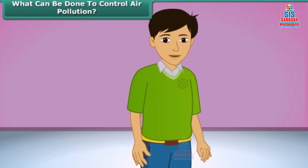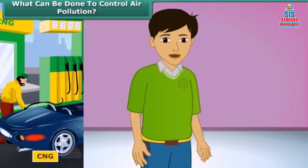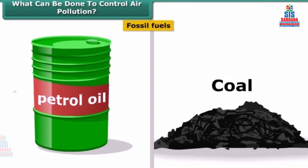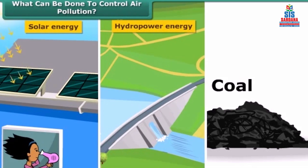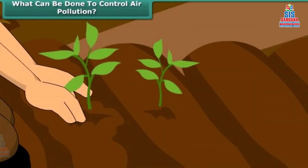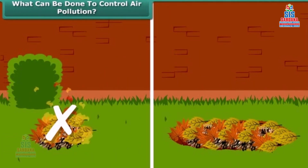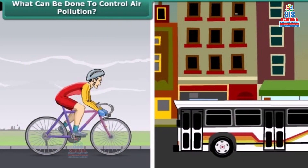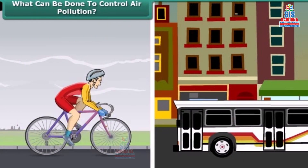What should we do to reduce air pollution? We can use clean fuels such as CNG, LPG, and unleaded petrol. Instead of fossil fuels, we can use solar energy, hydropower, and wind energy. We can also plant new trees. Rather than burning dry leaves, we can put them in a compost pit. We can walk more, switch over to bicycles for small distances, and use public conveyances.